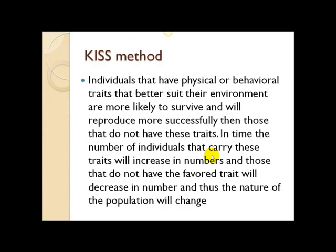Using the KISS method for evolution: individuals that have a physical or behavioral trait that better suits their environment are more likely to survive and therefore more likely to reproduce than those that don't have those traits. In time, the number of individuals that carry the good traits will increase, and those with less favored traits will decrease. That will change the population over time — and that is the definition of evolution.